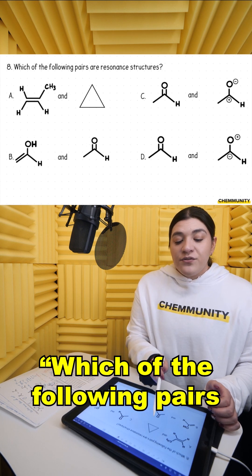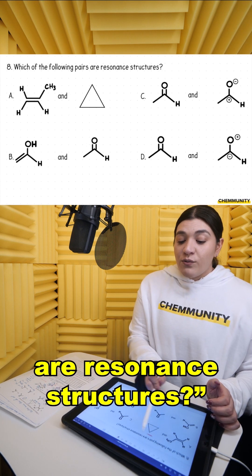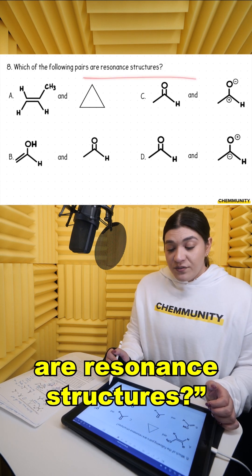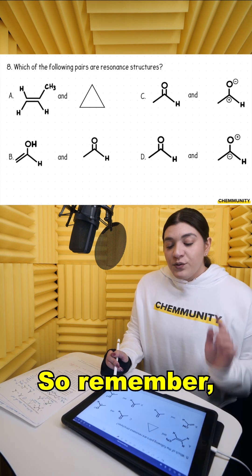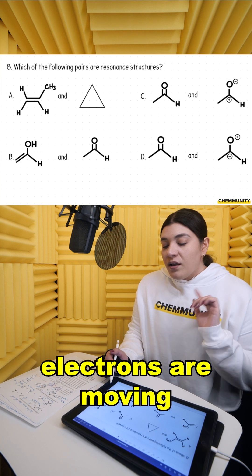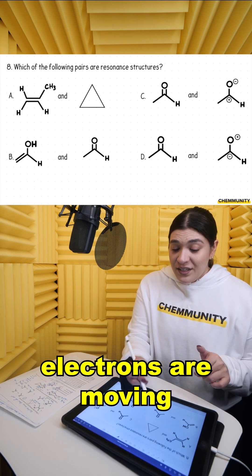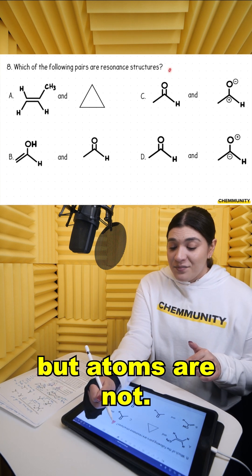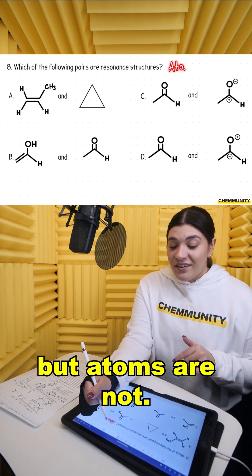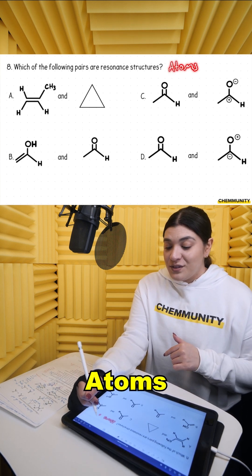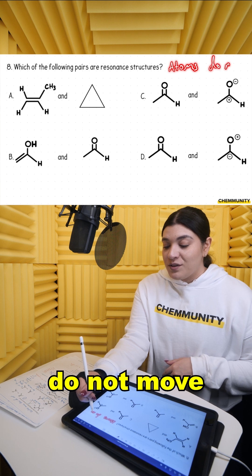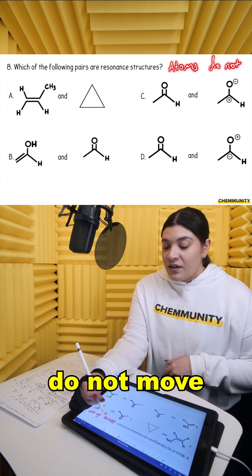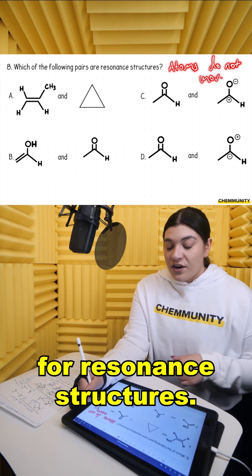Number eight: which of the following pairs are resonant structures? Remember, electrons are moving but atoms are not. Atoms do not move for resonant structures.